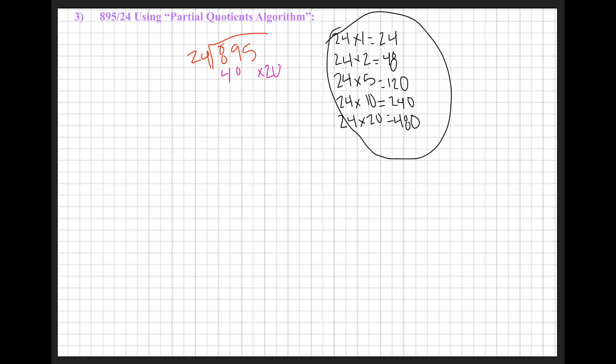24 times 20 equals 480. I'm going to subtract 480 from 895, so I'm still left with 415.